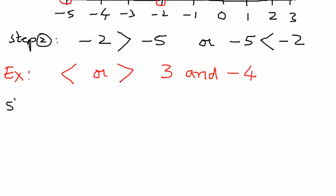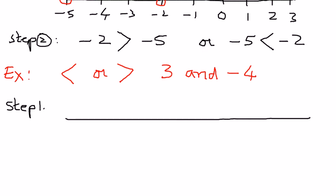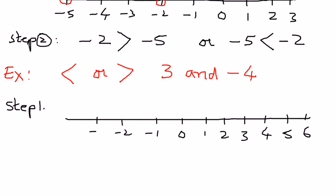We'll write down the steps the way we talked about in the first example. We'll draw the number line and identify some points. We call this one 0, and the numbers to the right of it are positive numbers: 1, 2, 3, 4, 5, 6 and so on. To the left: negative 1, negative 2, negative 3, negative 4, negative 5 and so on.